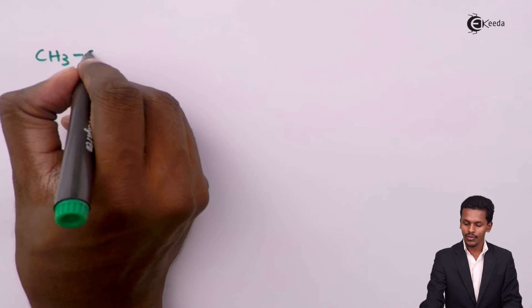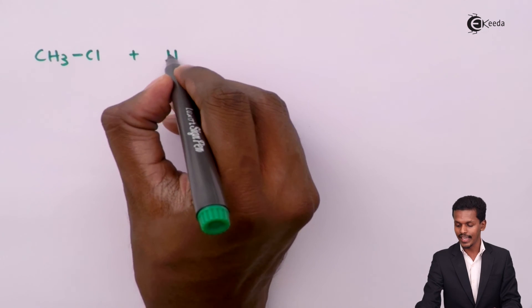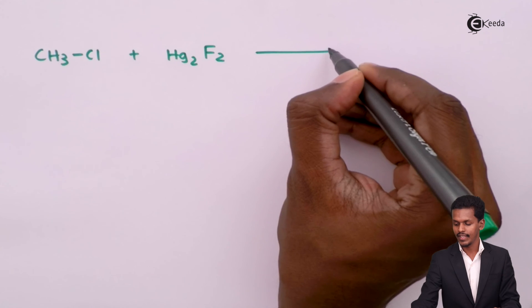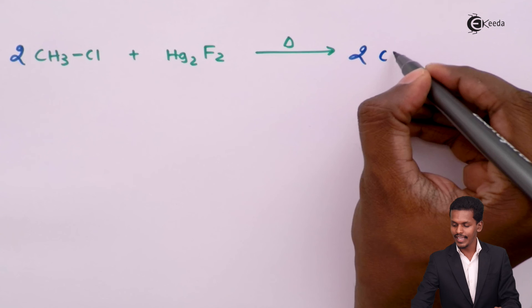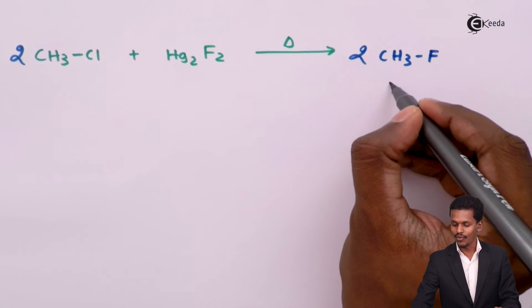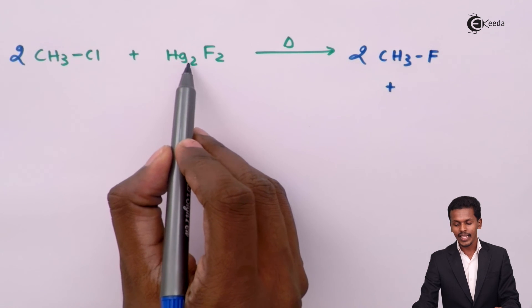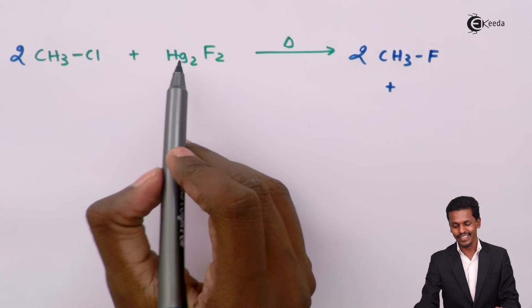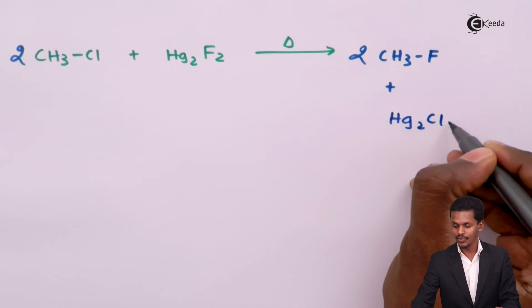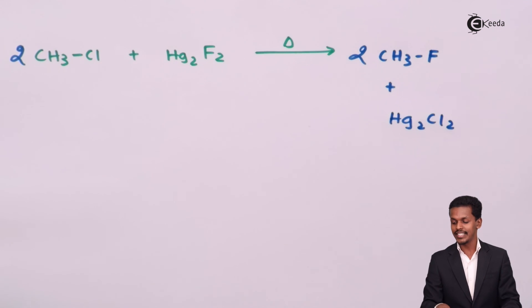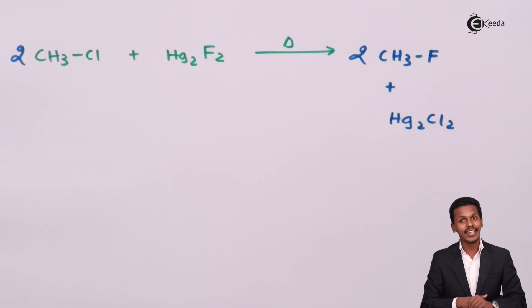Another example: if methyl chloride is treated with mercurous fluoride (Hg2F2), we need to balance the reaction. The balanced reaction gives two moles of CH3F along with Hg2Cl2 (mercurous chloride) as the byproduct. The main product we need is the alkyl fluoride, and this is what we have obtained.